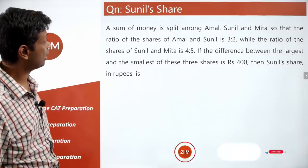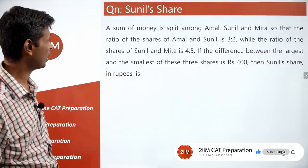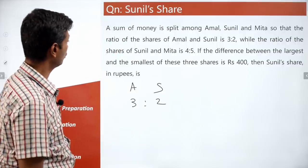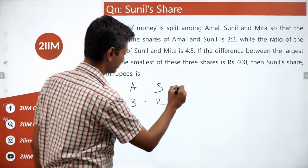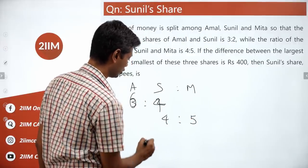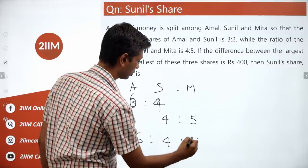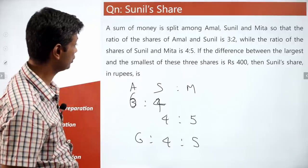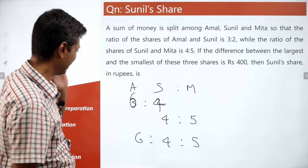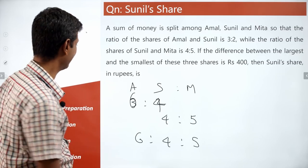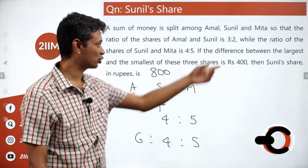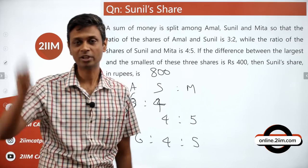A sum of money is split among Amal (A), Sunil (S), and Mita (M). A:S = 3:2 and S:M = 4:5. Combining: A:S:M = 6:4:5. Difference between largest (6) and smallest (4) is 2 units = 400, so 1 unit = 200. Sunil's share = 4 units = 800 rupees.